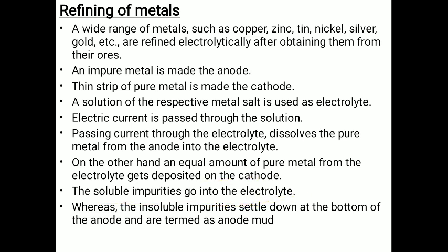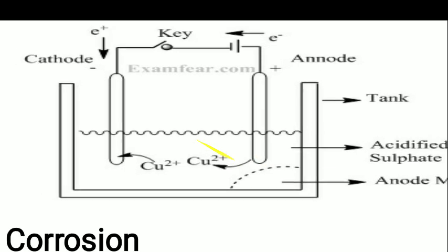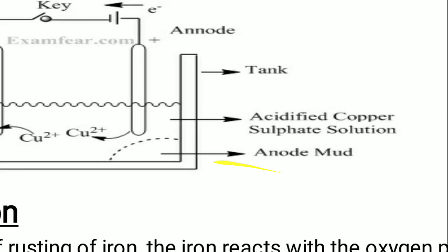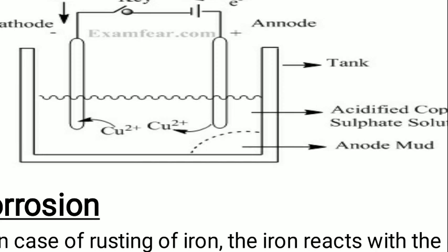An equal amount of pure metal from the electrolyte gets deposited on the cathode. The soluble impurities go into the electrolyte, whereas the insoluble impurities settle down at the bottom of the anode and are called anode mud. In the copper refining example, the tank contains acidified copper sulfate solution; copper ions (Cu²⁺) shift to the cathode and pure copper is deposited on it, while impurities settle as anode mud.